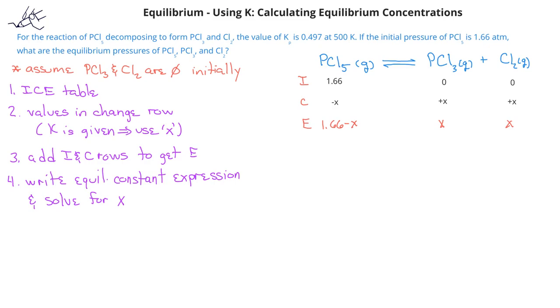Now we can write the equilibrium constant expression and plug in the equilibrium values that we just determined. The equilibrium constant expression for this system is the pressure of PCl3 multiplied by the pressure of Cl2 divided by the pressure of PCl5. When we plug in the equilibrium values, we have X times X in the numerator and 1.66 minus X in the denominator. And since we're given the equilibrium constant in this problem, we can set those equal to 0.497.